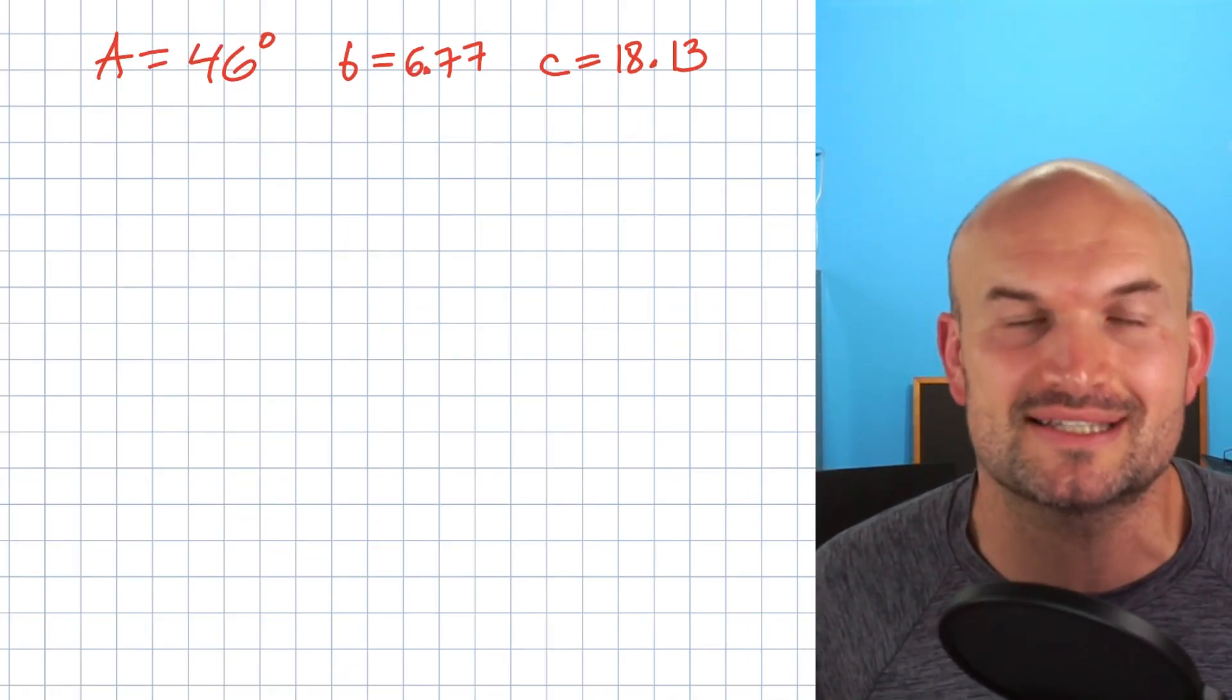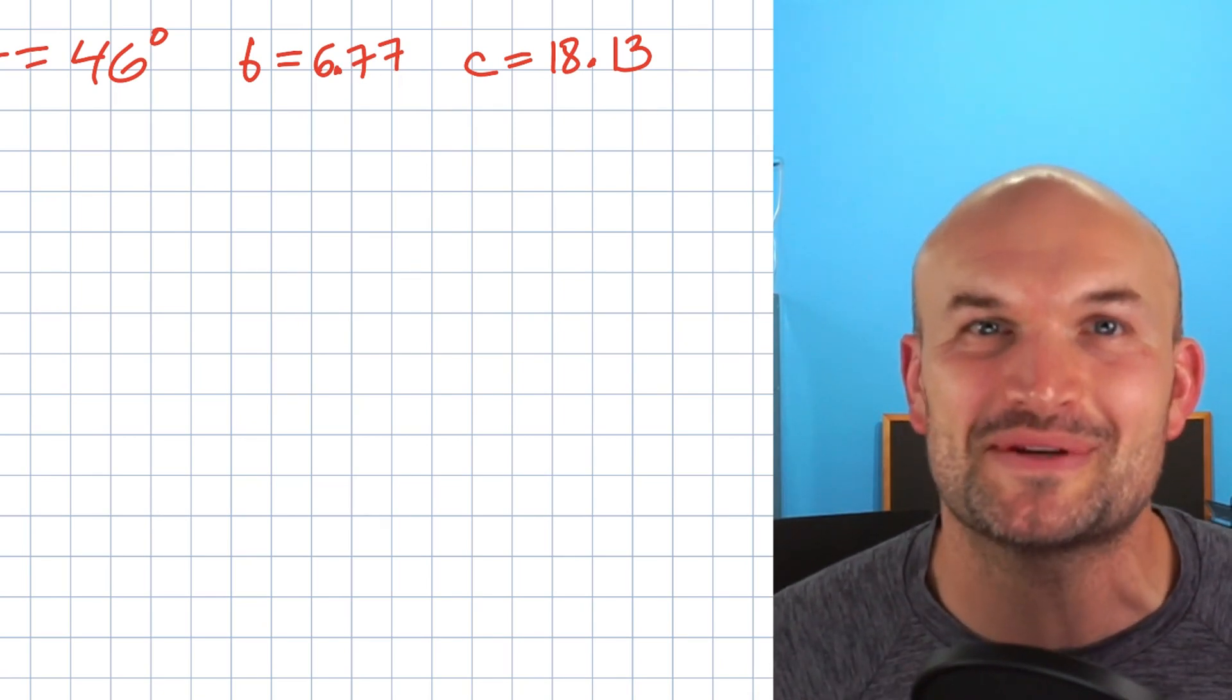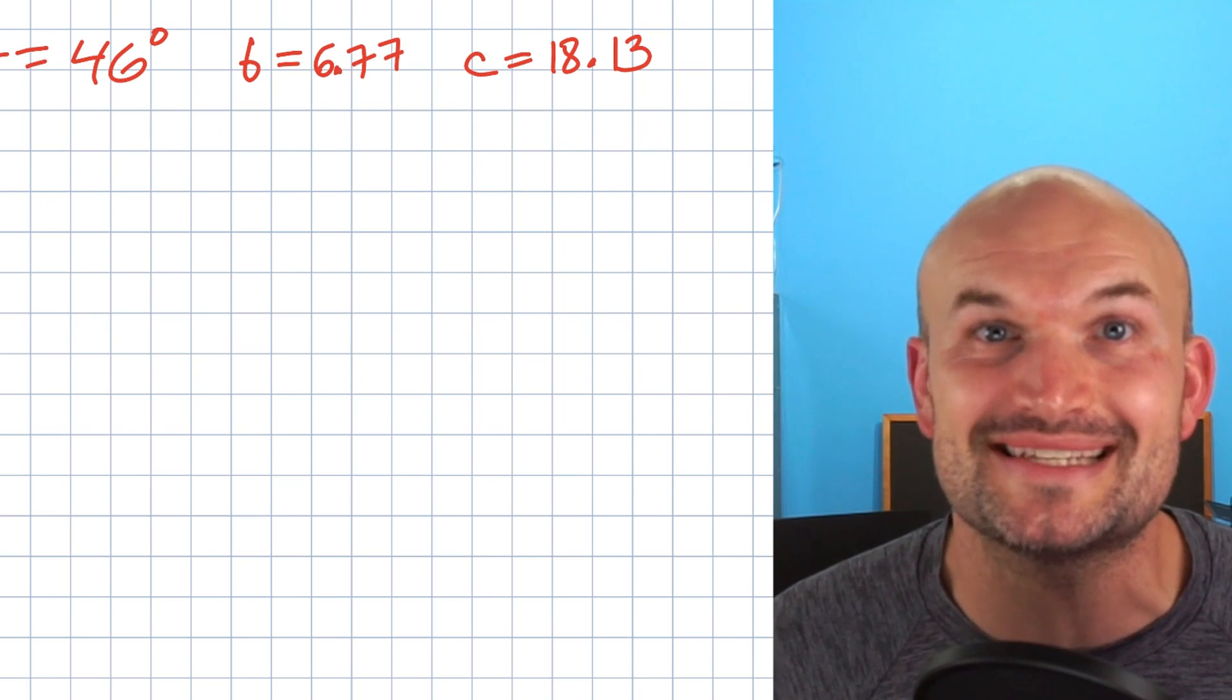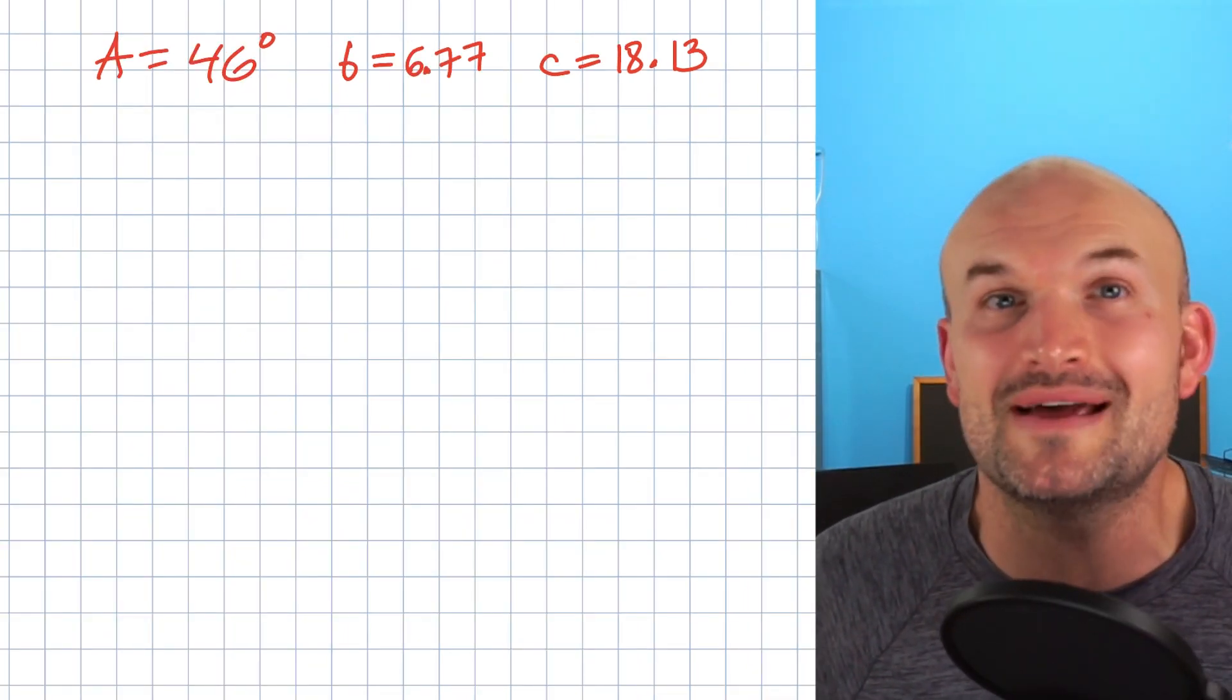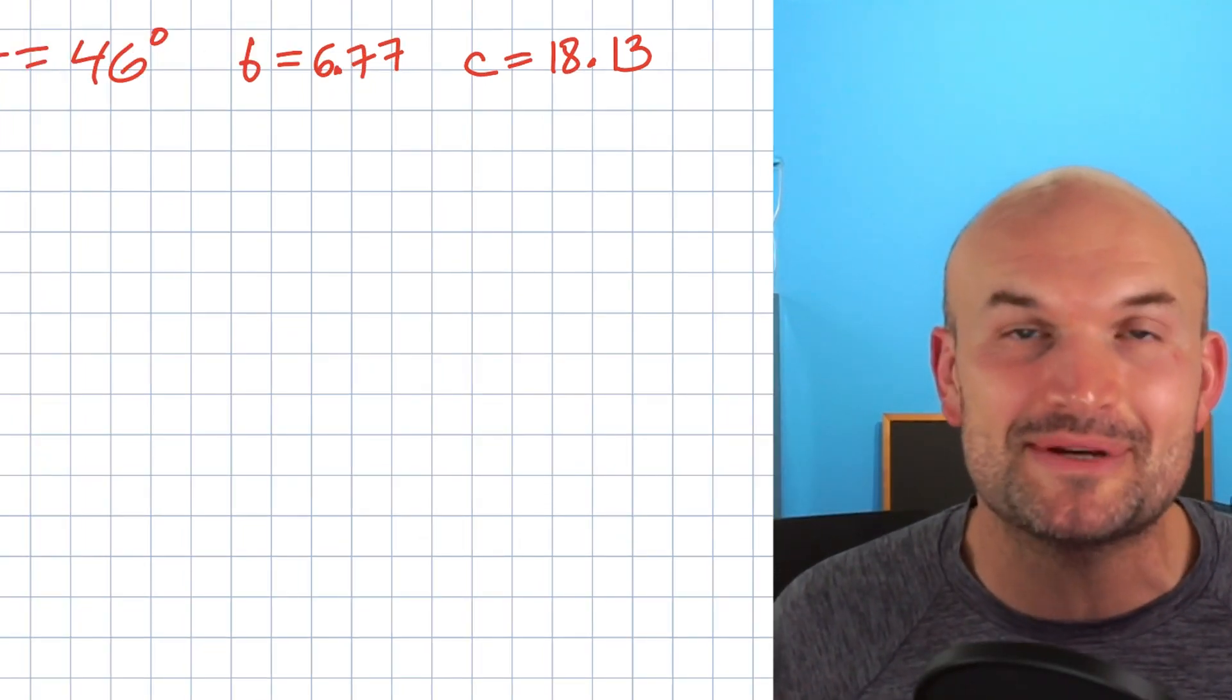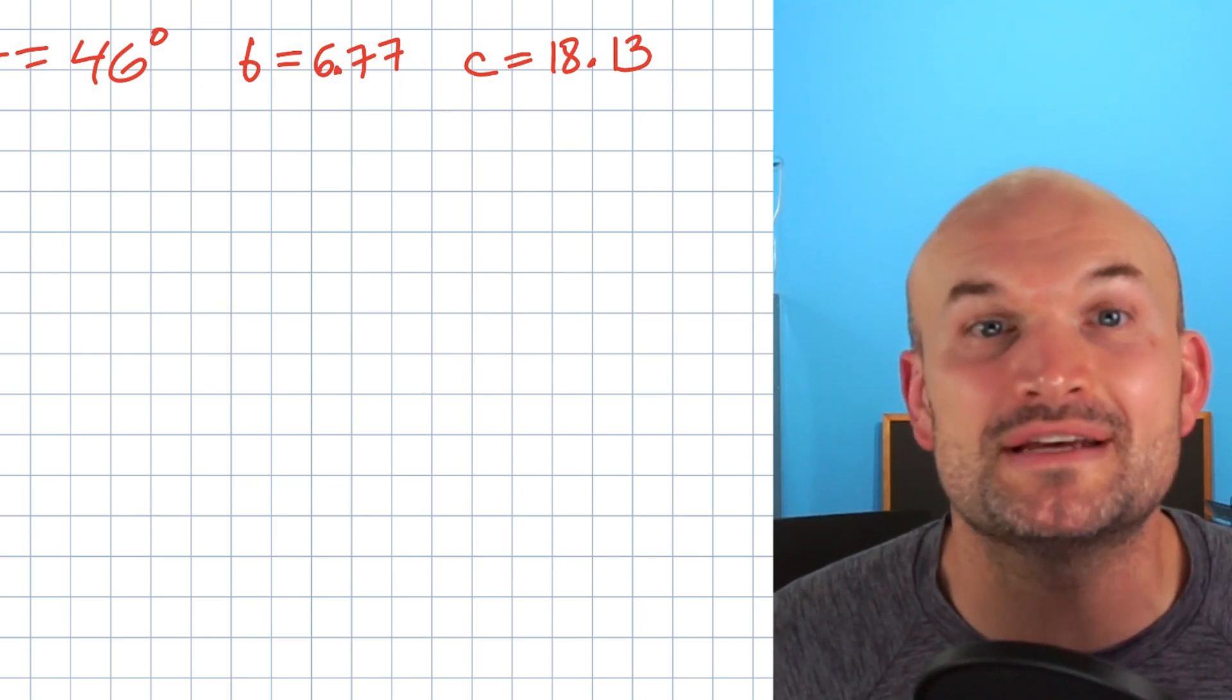And then once we get to the law of cosines, it's kind of like, ah, I just have a formula to follow. Easy, breezy, beautiful. Time to solve the equation. That's not really how it goes. But the point that I'm trying to make is that a lot of students, once they see a formula, they're like, well, I can just kind of plug and chug. I don't have to worry about the ambiguous case, and I am good to go. And in this video, I am here to tell you that is absolutely false.